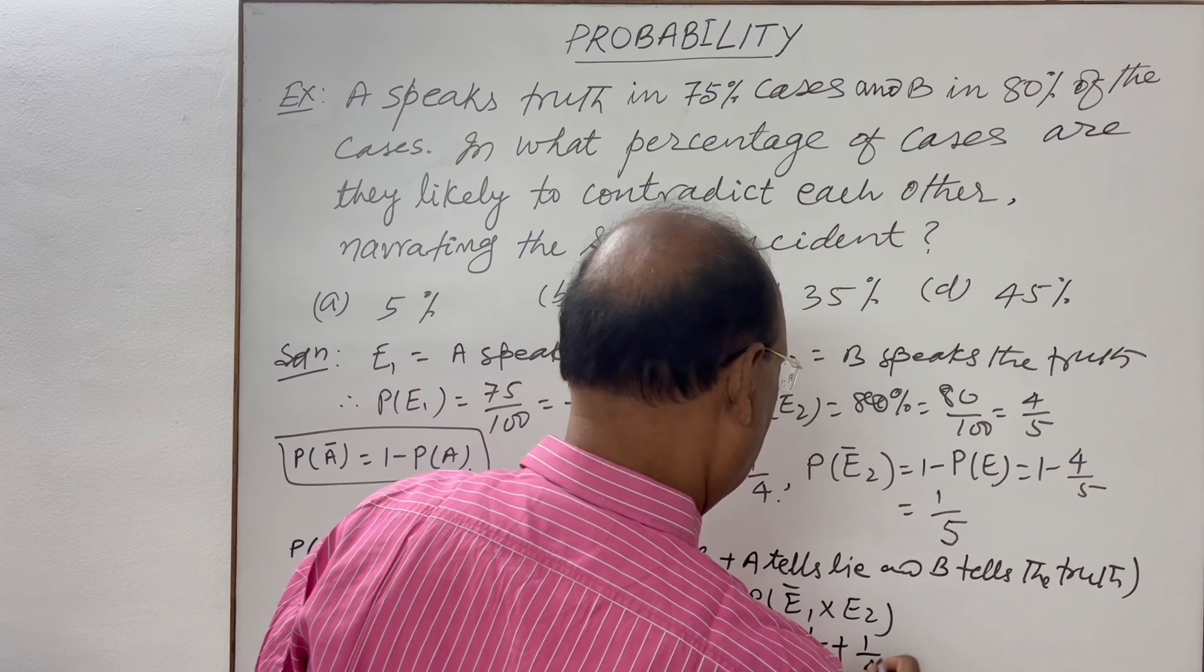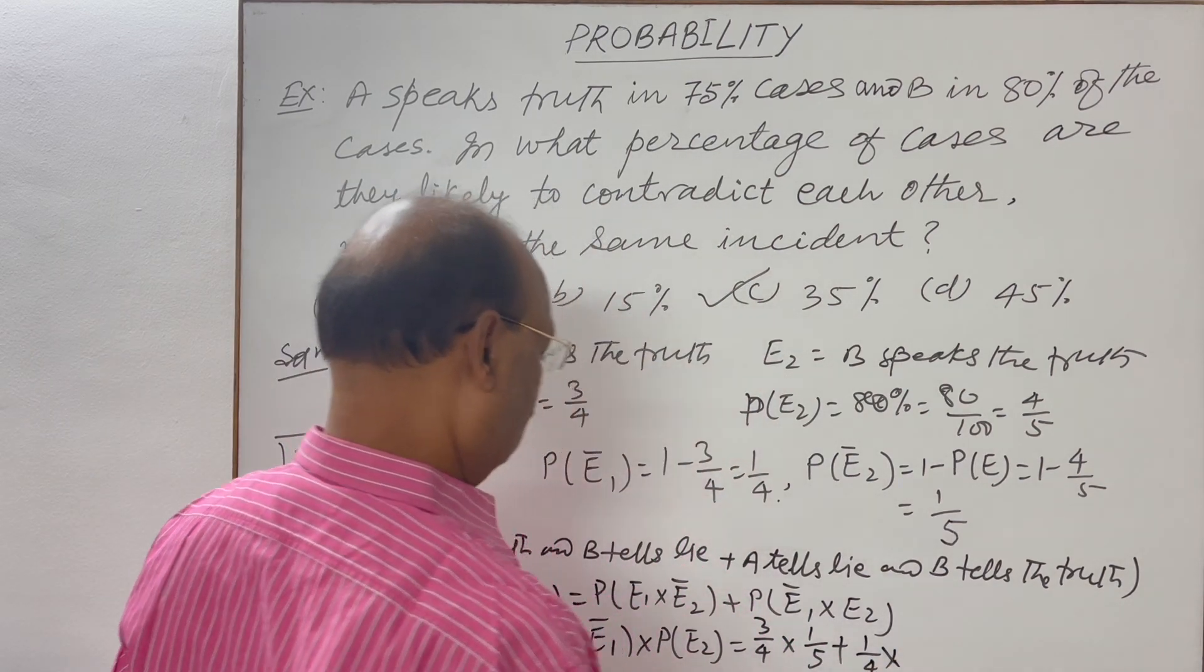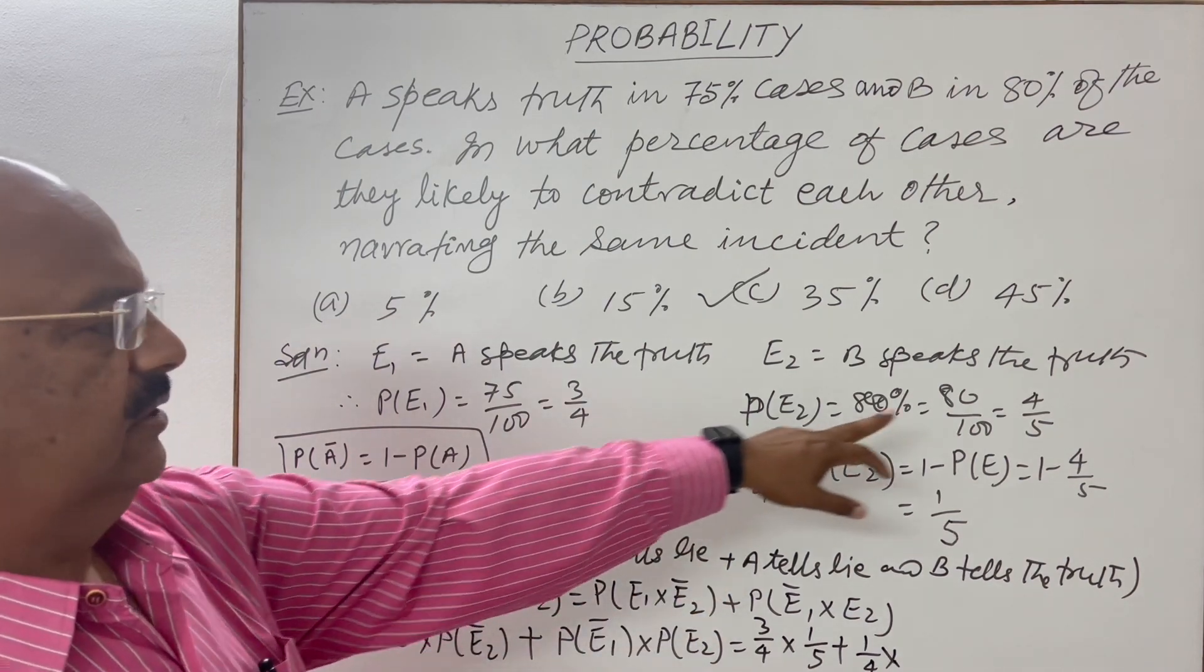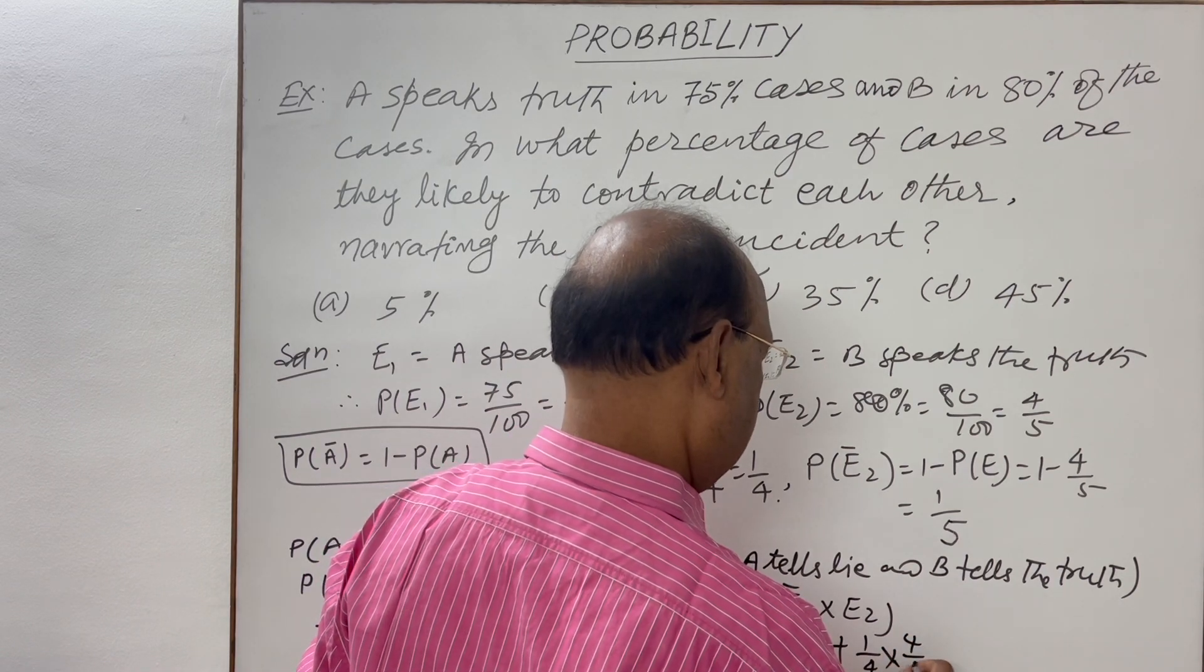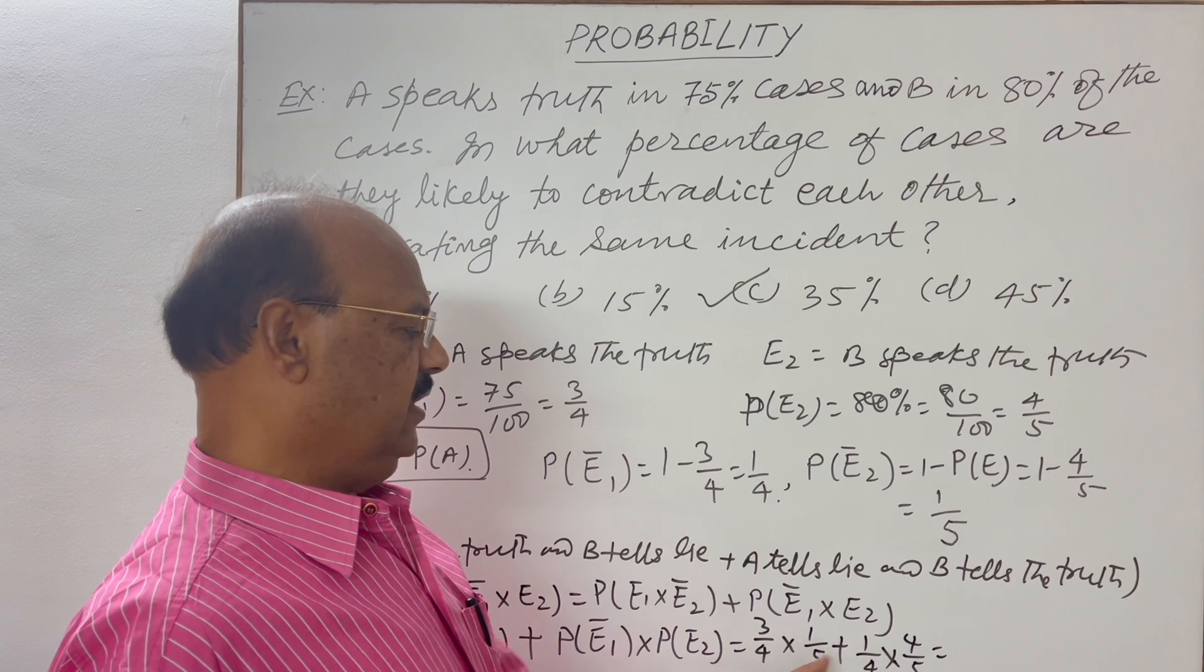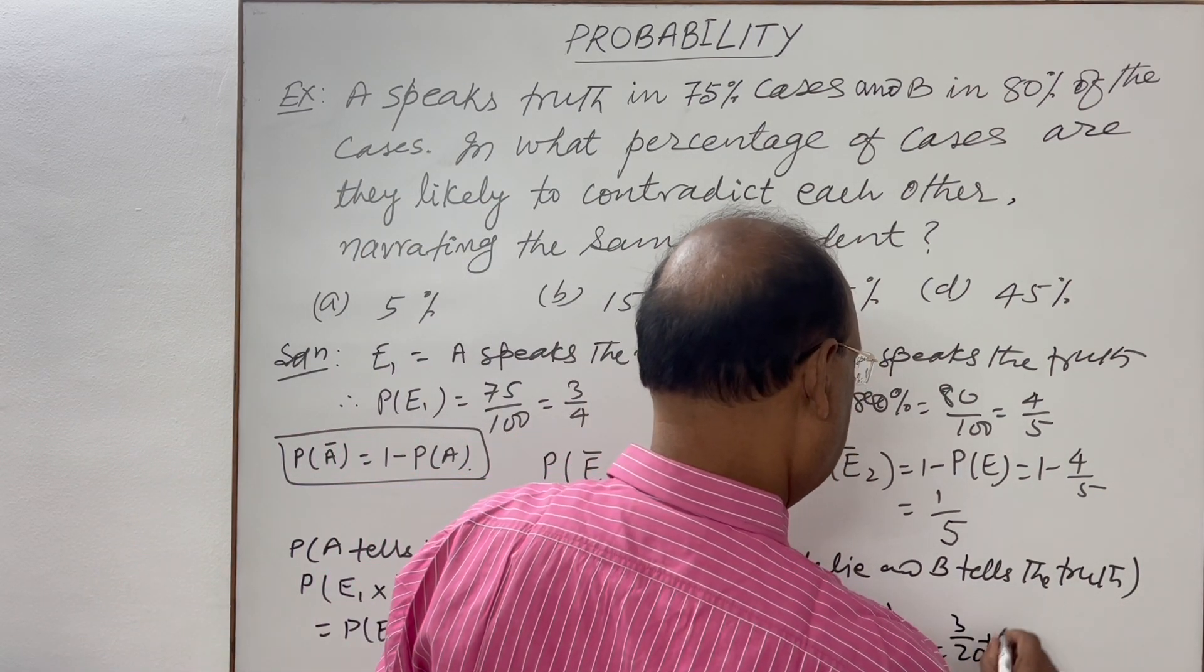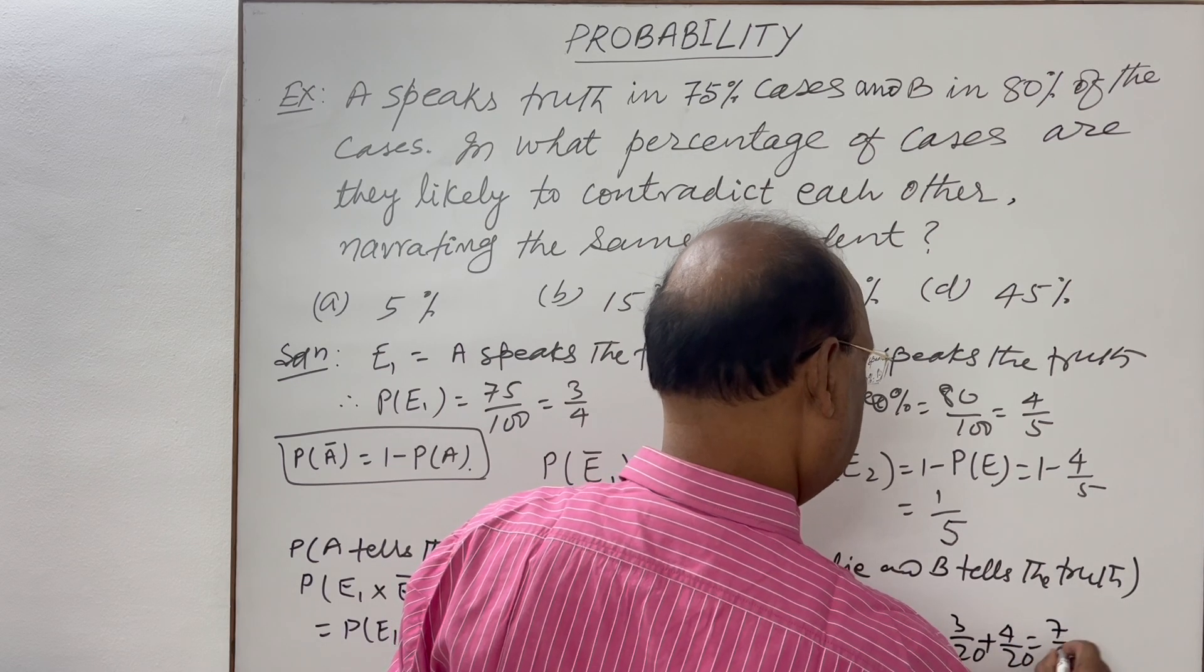This is 1 by 4 into probability of E₂, probability of E₂ is 4 by 5, this is 4 by 5. And simplify it. This is 3 by 20 plus 4 by 20, and this is equal to 7 by 20.